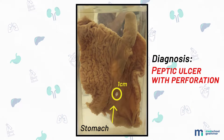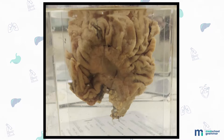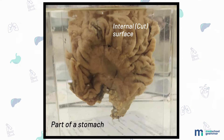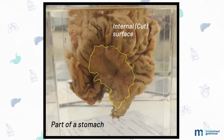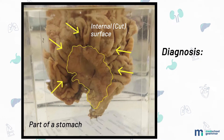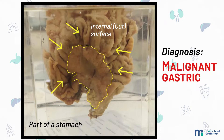By now I'm sure you've got a hang of the format, so I will describe just the basic gross pathology of the specimens from here on. Our next specimen, as you can see on the screen, is a specimen of a part of the stomach measuring 7 by 6 centimeters, showing an external and an internal surface. The external surface is congested. The cut surface shows an ulcer measuring 3 by 3 centimeters with everted, irregular margins. Surrounding stomach mucosa shows prominent mucosal folds. Diagnosis: this is a specimen of a malignant gastric ulcer.